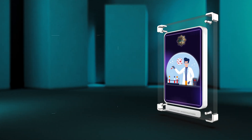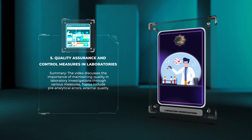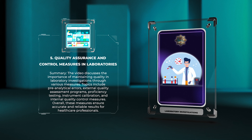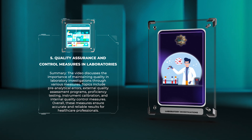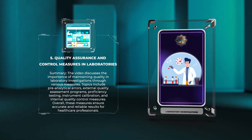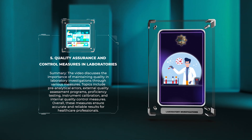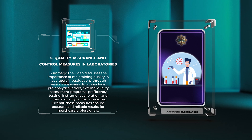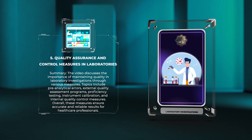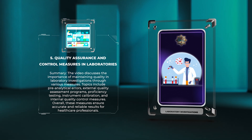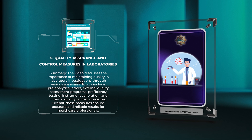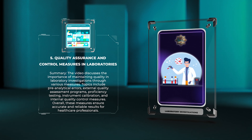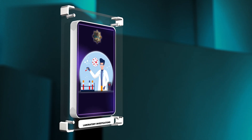The video discusses the importance of maintaining quality in laboratory investigations through various measures. Topics include pre-analytical errors, external quality assessment programs, proficiency testing, instrument calibration, and internal quality control measures. These measures ensure accurate and reliable results for healthcare professionals.